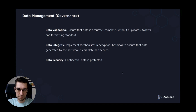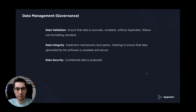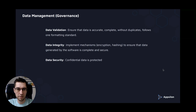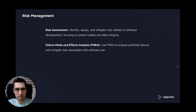There is data management — sometimes referred to as data governance. There is data validation, so you ensure that your data is accurate, complete, without duplicates, and follows one formatting standard. There is data integrity — you implement mechanisms such as encryption or hashing to ensure that data generated by the software is complete and secure. And you have data security, so confidential data is protected.